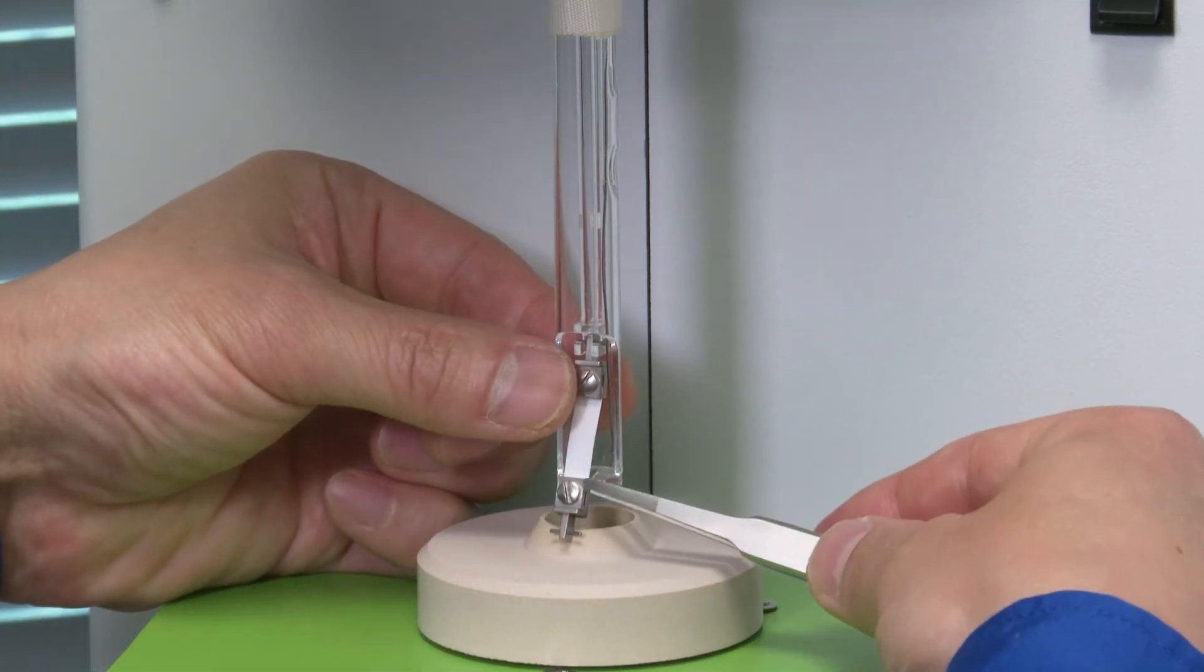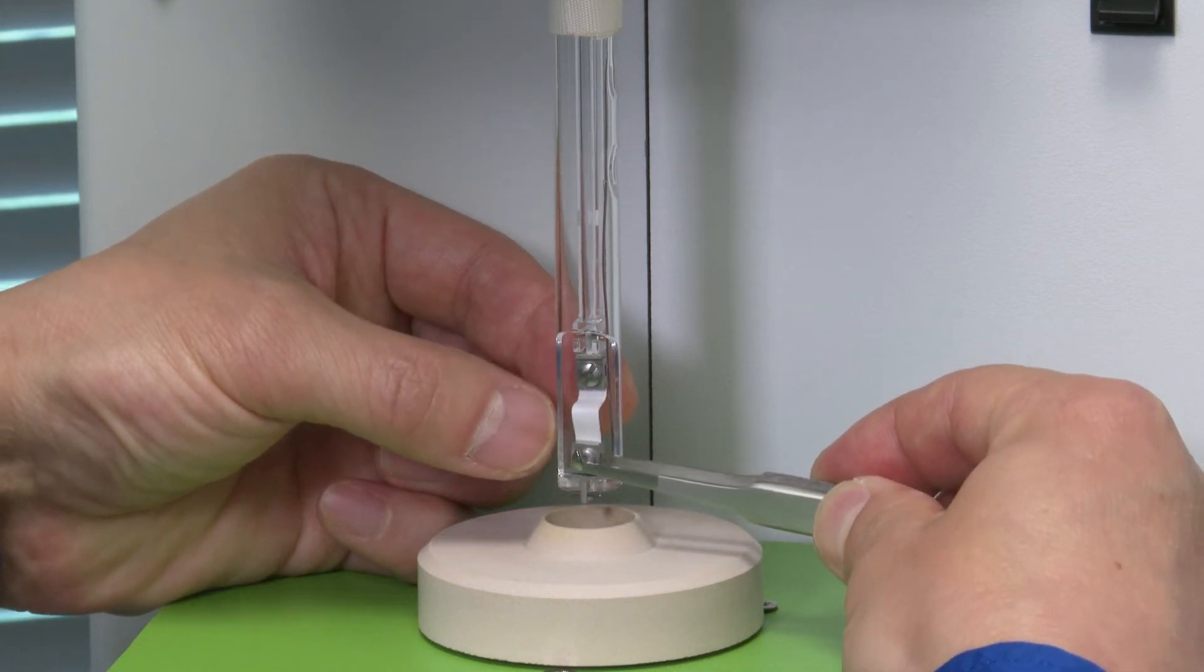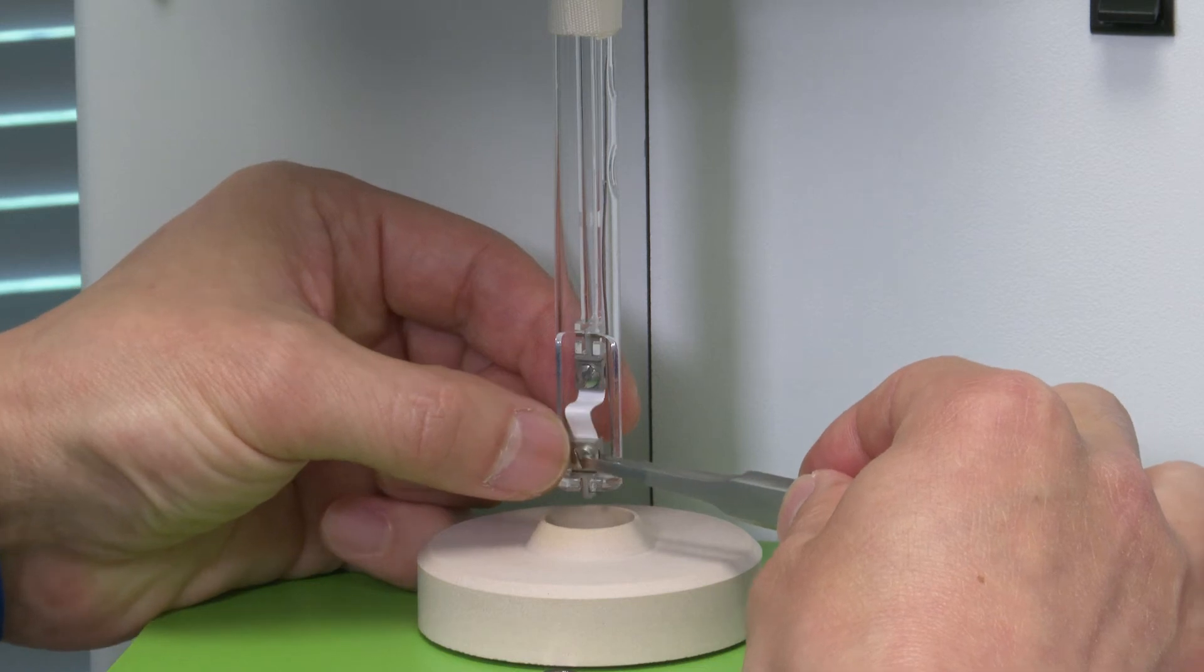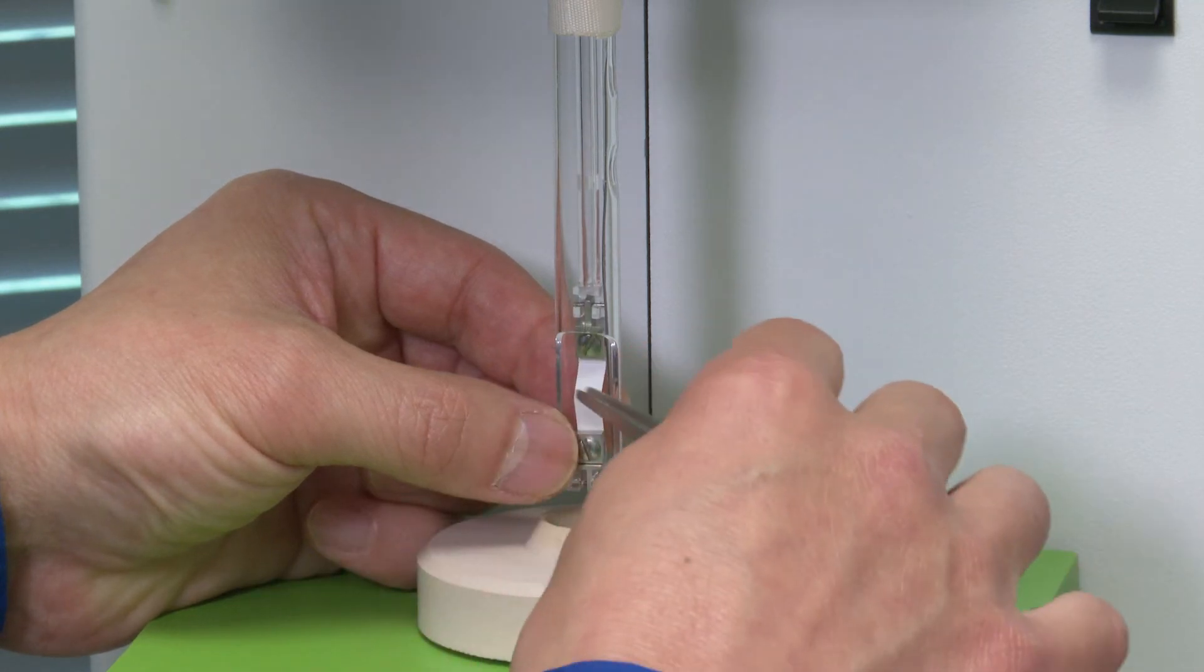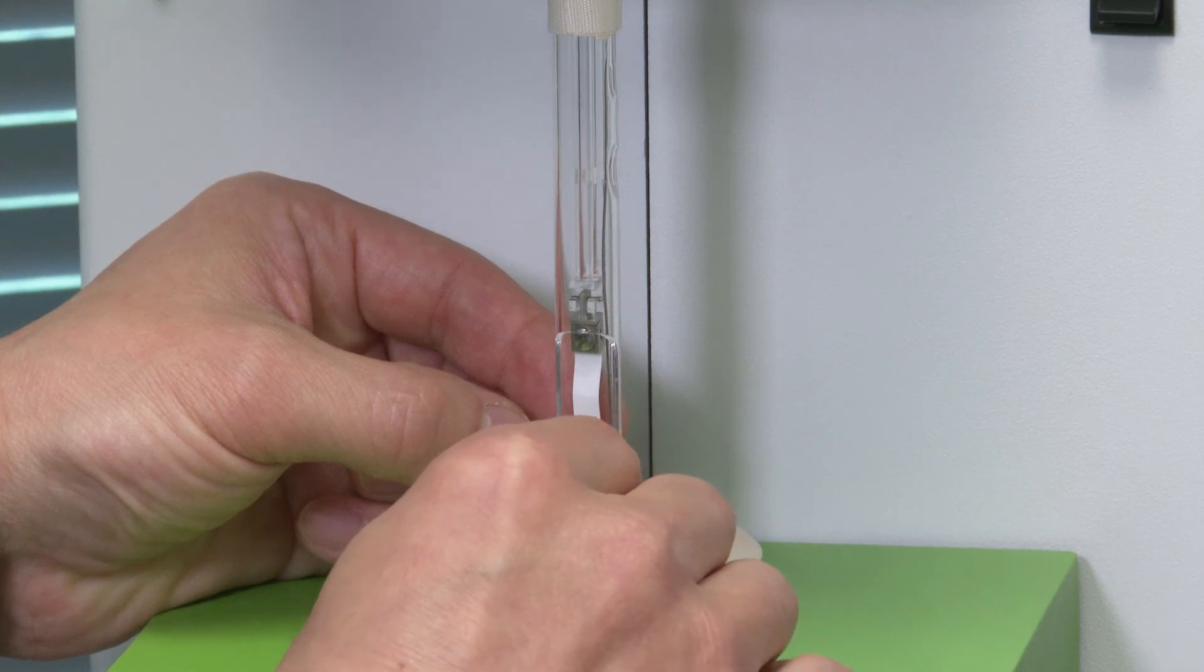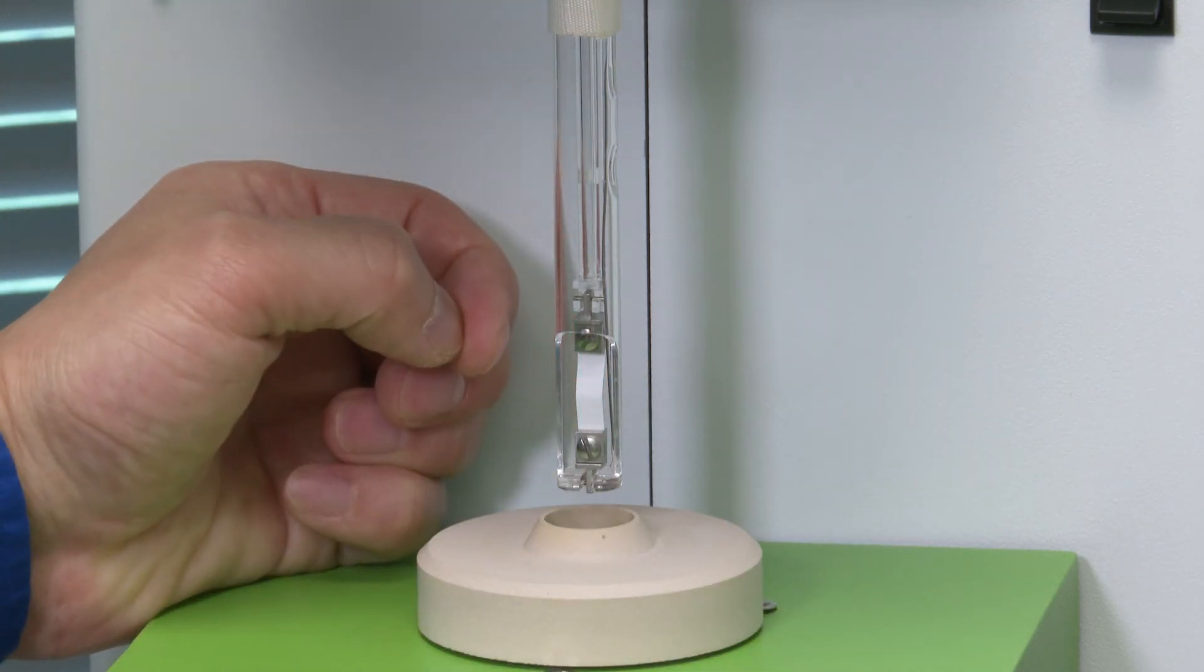Then you can put this lower clamp into place and lift the probe. Make sure the lower clamp fits into the groove under the platform.